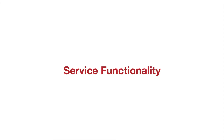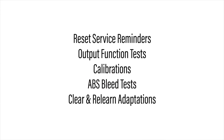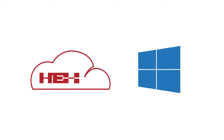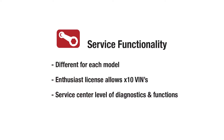Now let's talk about service functionality. It is the ability to reset service reminders, do output function tests, calibrations, ABS bleed tests, the clearing and relearning of adaptations, and much more. It is accessed via the HEX Cloud or the Windows GS911 PC app, and it's different for each model of motorcycle because each model has different components. Service functionality does affect the 10 bike VIN limit on your enthusiast license, so if you want to service an unlimited number of motorcycles you'll need a pro license. Service functionality is what makes the GS911 Wi-Fi such a powerful tool, giving you service center levels of diagnostics and functions. For the latest level of service functionality for your motorcycle, go to hexcode.co.za and see the function chart.